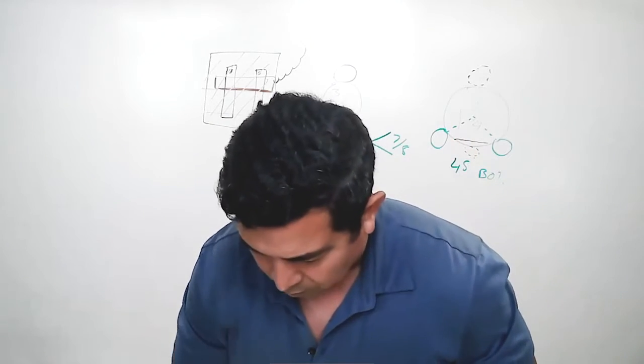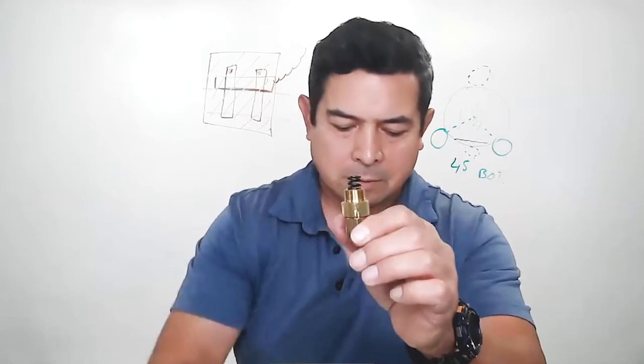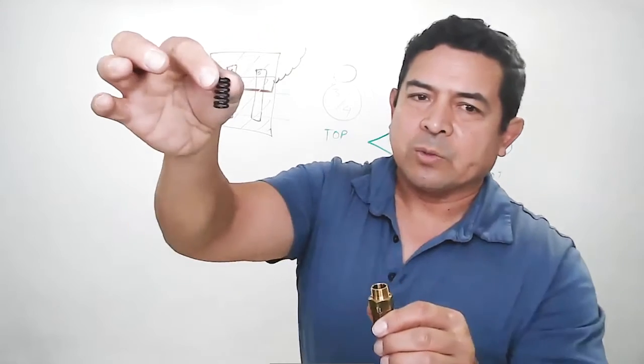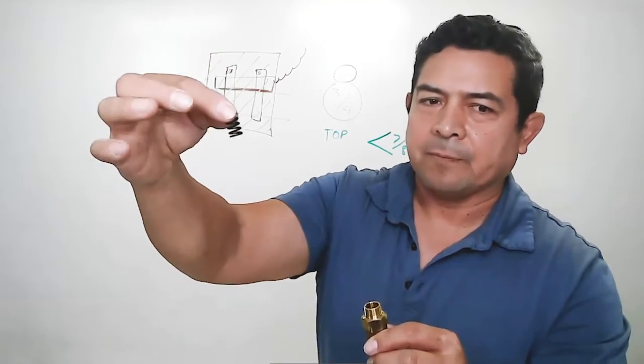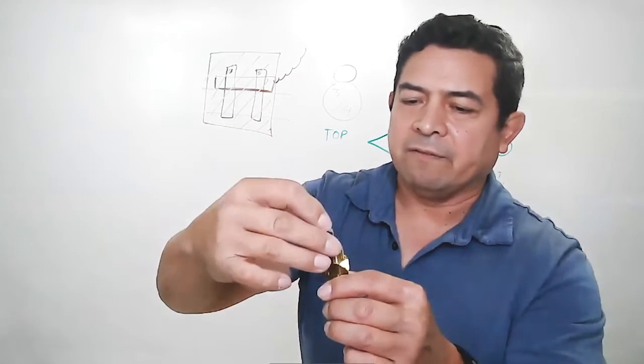Now, once those pins push down on that, it compresses that spring right there. This spring is what they call superheat spring. So this is my superheat spring. And it fits right on up in there. Now at the bottom of this, there's another little brass piece. And that brass piece is adjustable.